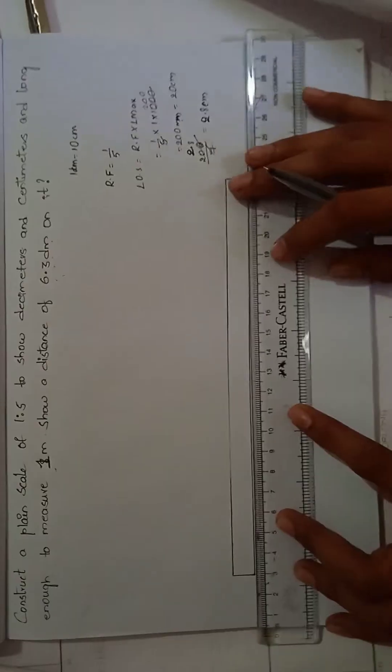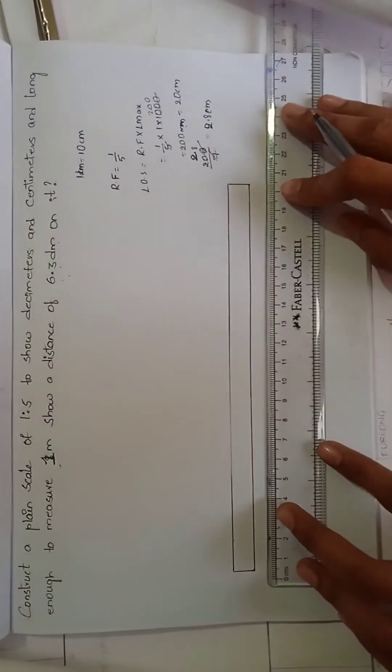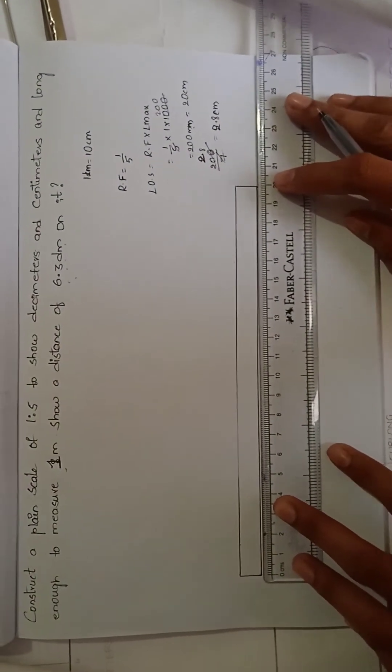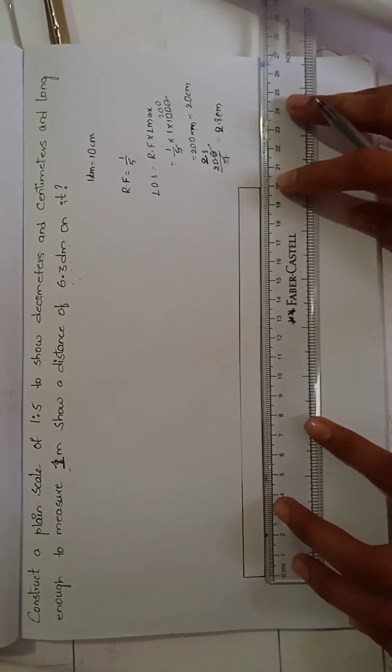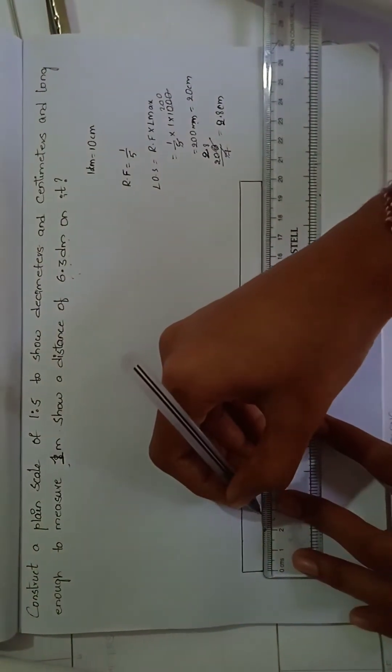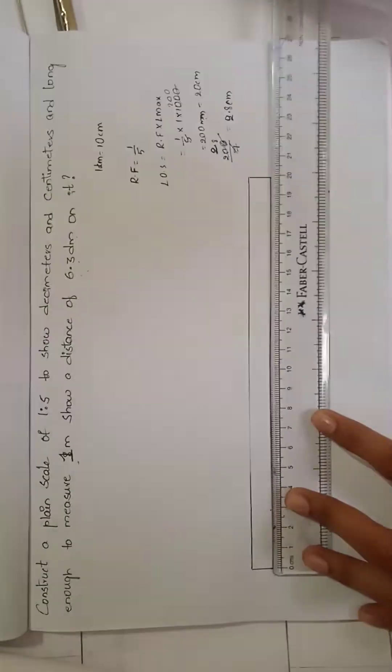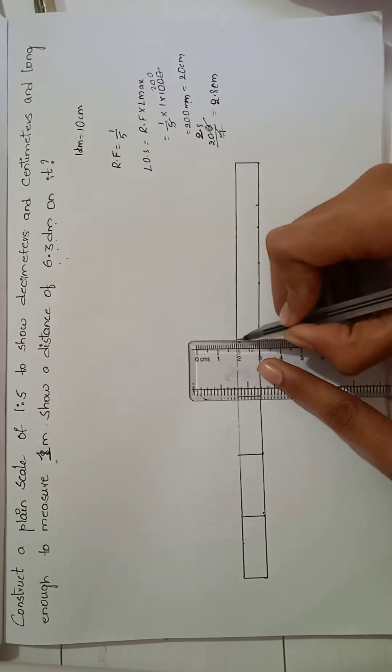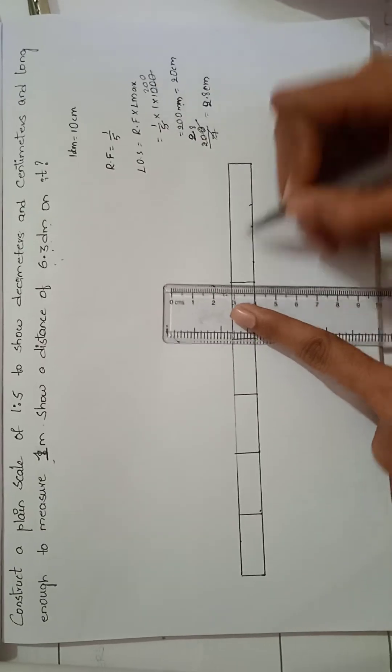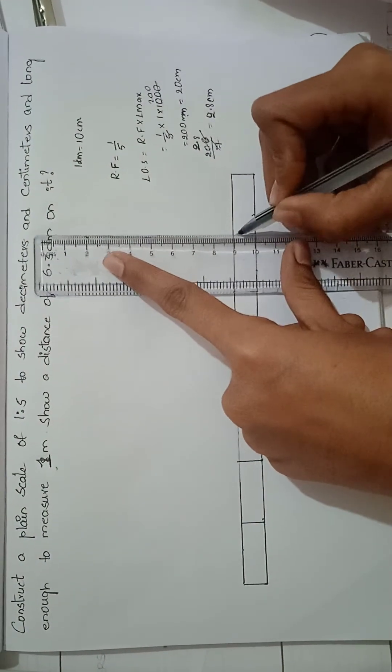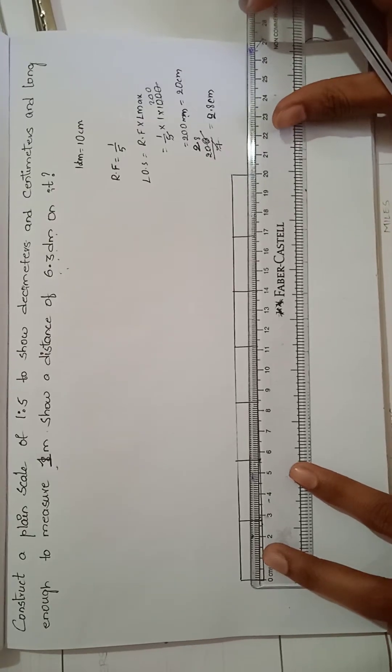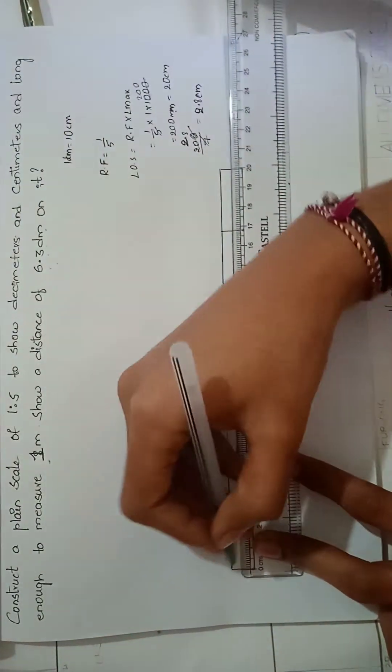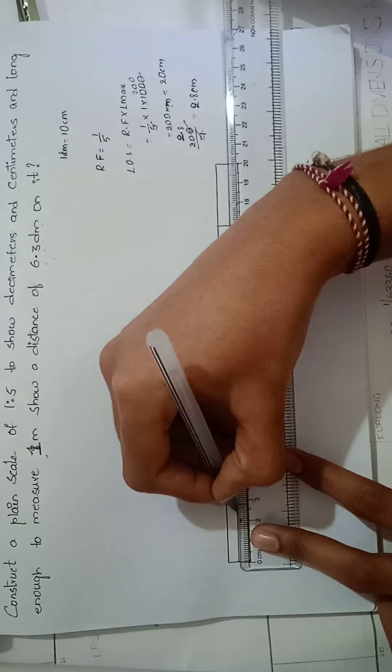We have to divide this into 7 parts with 2.8 centimeters each part. We are dividing this into 7 parts. After dividing then we have to mark it 0, 5 to the alternative boxes.